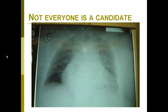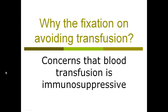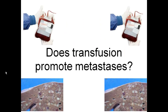Not everyone is a candidate for low CVP or normovolemic hemodilution. For example, a patient with an enlarged heart may become hypotensive quickly and is very dependent on good filling pressure for adequate cardiac function. The reason surgeons are so fixated on avoiding transfusion relates to concerns that blood transfusion is immunosuppressive and may increase tumor recurrence after surgery. There may be immunomodulatory effects of packed cells or other blood product transfusion, and this appears to be the case even with leuko-reduced blood products.